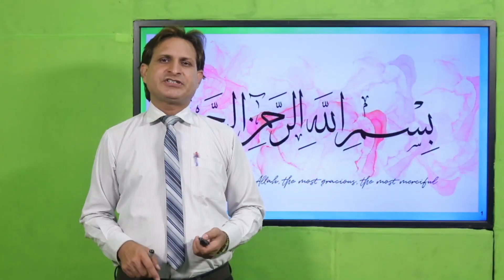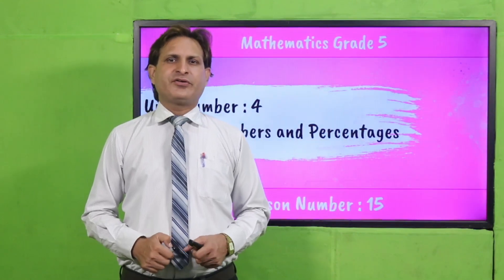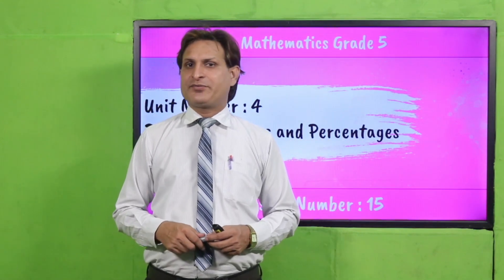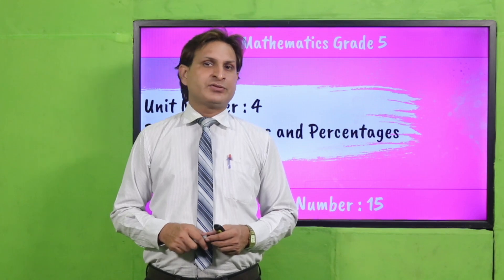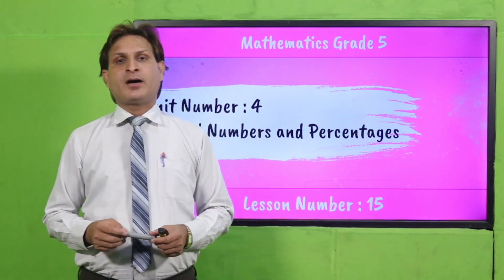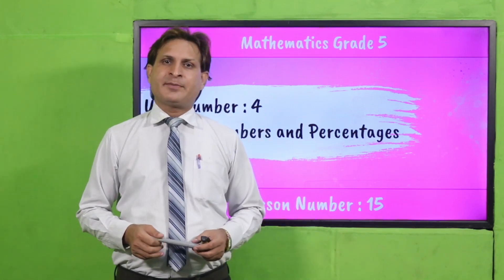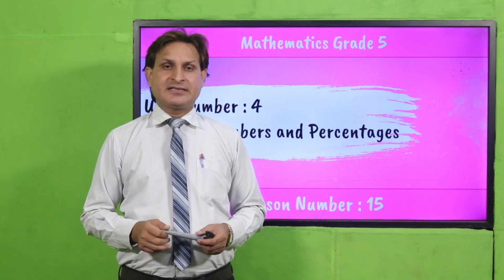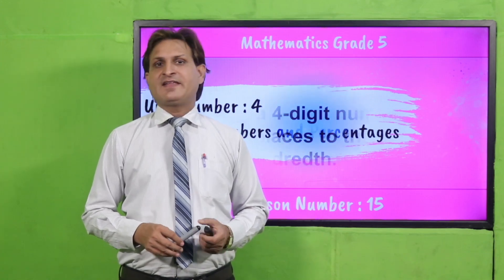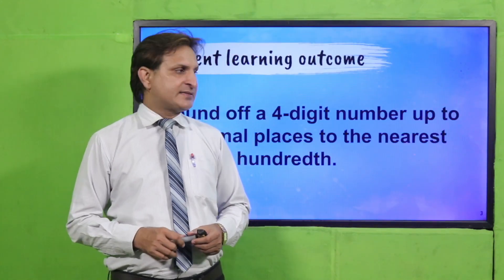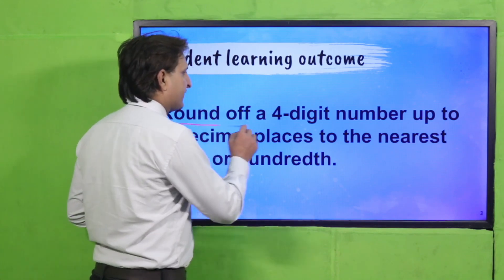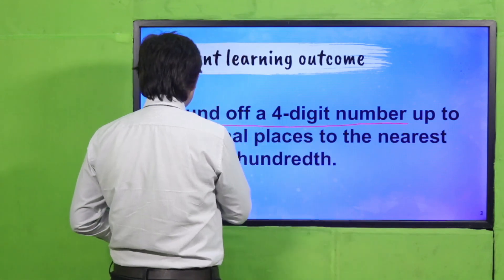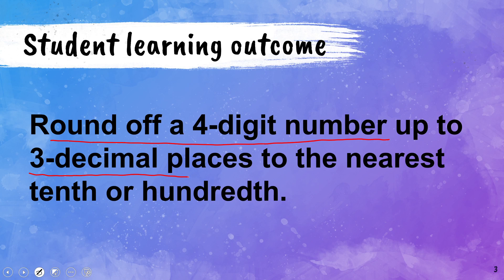Bismillah ar-Rahman ar-Rahim. Respected teachers and dear students, Assalamualaikum. I am Vakas Ahmed. Today we will discuss Mathematics Grade 5, Unit number 4, about decimal numbers and percentages, Lesson number 15. In this lesson, we will discuss the SLO: rounding a 4-digit number up to 3 decimal places to the nearest tens or hundreds.